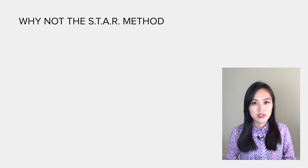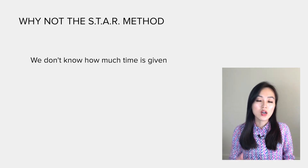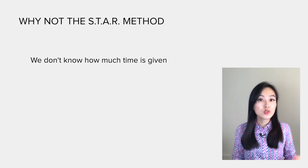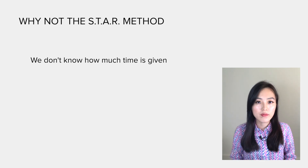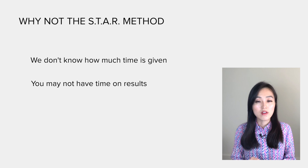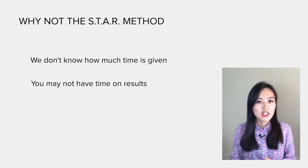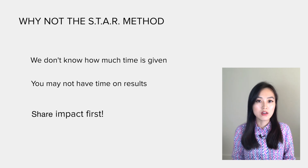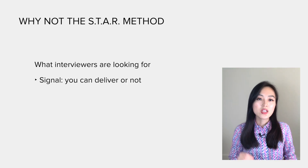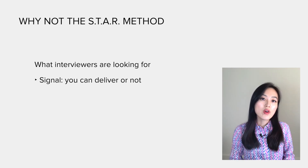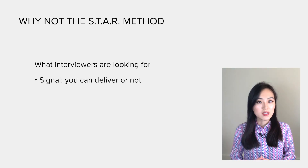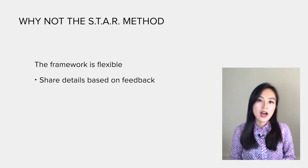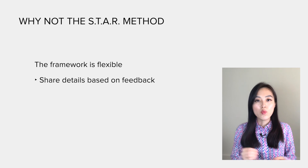So my friend never got the chance to talk about his actions or the outcome. The point is we don't know exactly how long the interviewer wants us to talk — it can range from 2 minutes to 20 minutes, totally depending on the interviewer. If you plan to leave the result or impact to the end, you very likely won't get a chance to mention it. With the framework I shared, you tell the outcome first, so there's no need to worry about missing it.